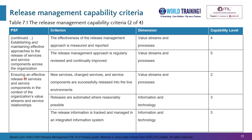Moving to the second PSF: ensuring an effective release of services and service components in the context of the organization's value streams and service relationships. At level 2, new services, changed services, and service components are successfully released into live environments. At level 3, releases are automated where reasonably possible — consistent with the general rule that automation occurs at level 3 — and release information is tracked and managed in an integrated information system.